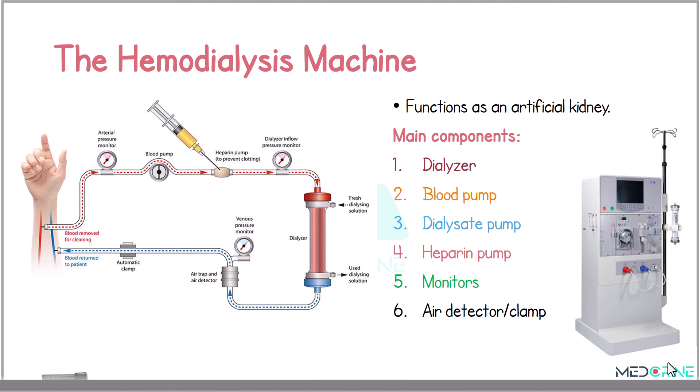A hemodialysis machine functions as an artificial kidney. Some of the main components of this hemodialysis machine include a dialyzer, a blood pump, a dialysate pump, heparin pump, monitors, and air detectors. You can have a look at this image to locate each of these components.